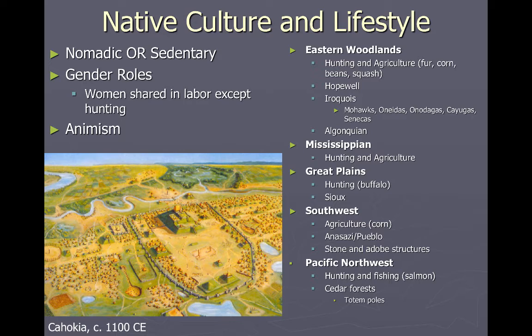The Pacific Northwest: hunting and fishing for salmon. Why fishing? Great rivers, the Pacific Ocean — plentiful. That geography is a very wooded area. The cedar wood — that's where we get those totem poles. You can see how they adapted, and I'll show you that in a second.